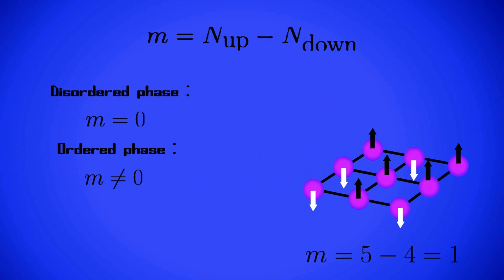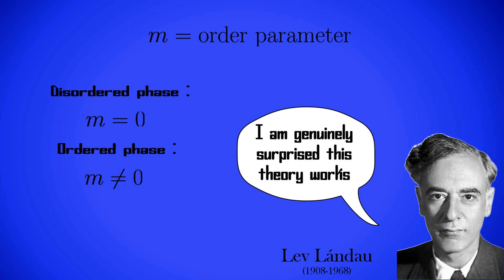When we are at the disorder phase, the magnetization equals 0, and there are approximately the same number of up and down spins. On the other side, for the order phase, M is not equal to 0, and we can see how clusters emerge. The magnetization can be considered the order parameter, since it determines whether we are in a phase or the other.